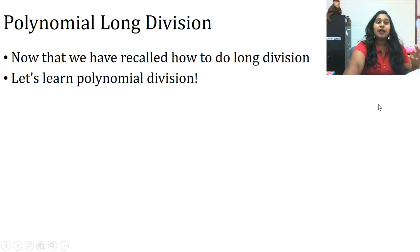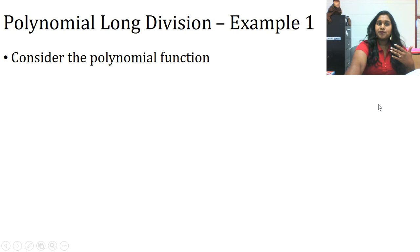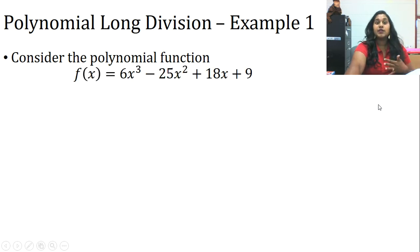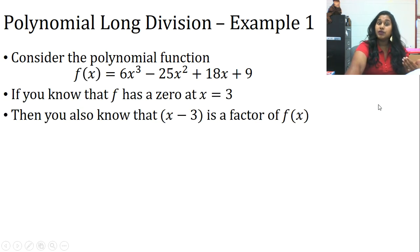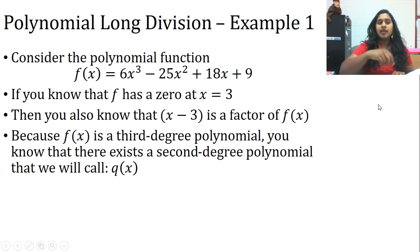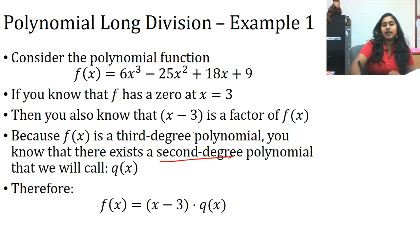So brief recall. Now let's look at polynomial long division. Consider this polynomial function: f(x) is equal to 6x³ - 25x² + 18x + 9. If you know that f has a zero at x equals 3, then you also know that there must be a factor of x minus 3. So basically, if I know I have a solution at 3, then what is that in its factored form? If you're struggling with this concept, see me, or you can wait until the next video when we actually talk about the factor theorem. Because you know that this is a third-degree polynomial, then if I factor out an x, what's left? So what's 6x³ divided by x? x². That's that second-degree polynomial they're talking about.